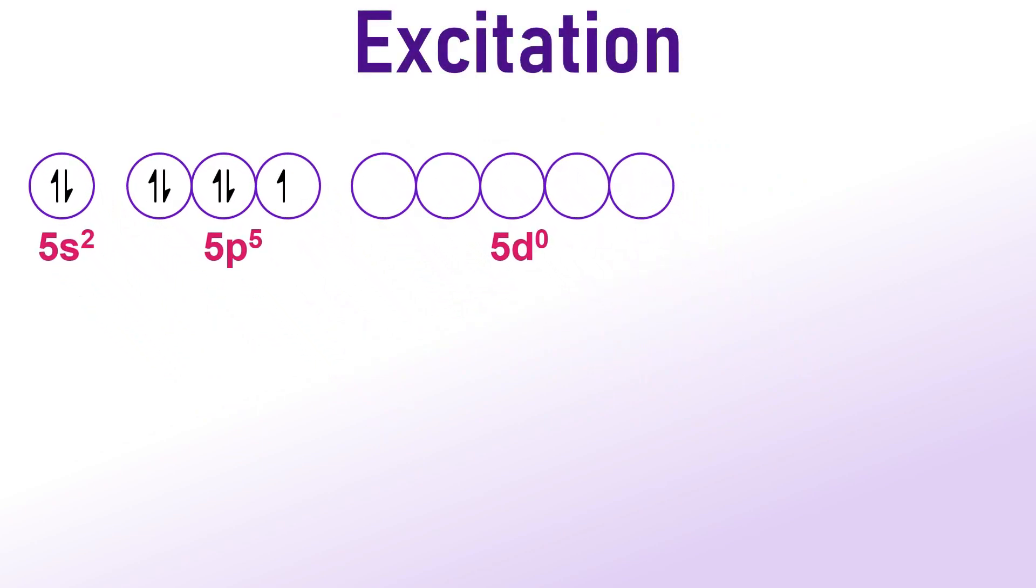Now, let us address the how aspect of the question. When sufficient amount of energy is supplied, the iodine atom undergoes excitation. In this process, two electrons from the 5p subshell and one of the 5s electrons become unpaired and undergo excitation into empty 5d orbitals.